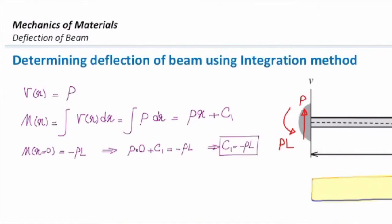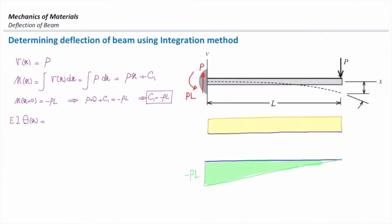I determined C1 by considering what I call boundary conditions — the status of moment, shear, deflection, or slope at a certain point on the boundary of the structure. Now I need to determine slope by integrating one more time. EI times theta equals the integral of moment, which gives Px squared over 2 minus PLx plus a constant C2.